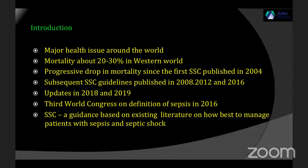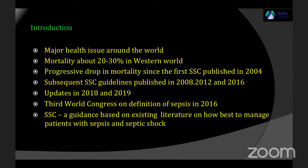As we all know, septic shock and sepsis are major health issues all around the world. In the late 90s, mortality in Western countries from septic shock was around 40 to 50 percent. The first Surviving Sepsis Campaign guidelines were published in 2004, and since then there has been approximately a one percent reduction in mortality per year, bringing Western world mortality to 20 to 30 percent. Subsequent guidelines came in 2008, 2012, and 2016, with updates in 2018 and 2019.